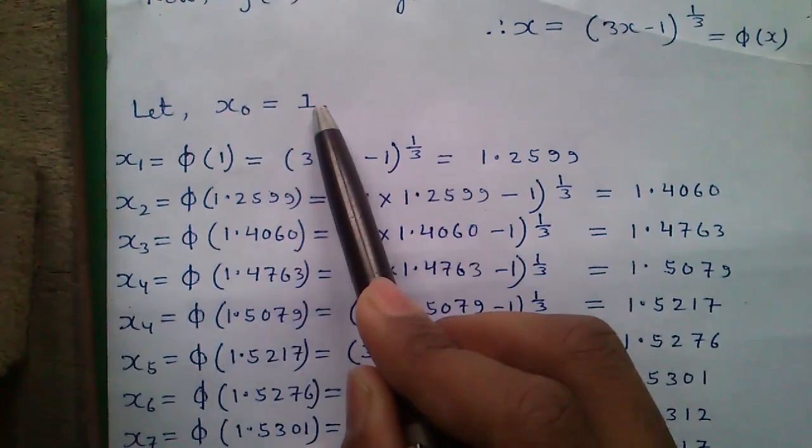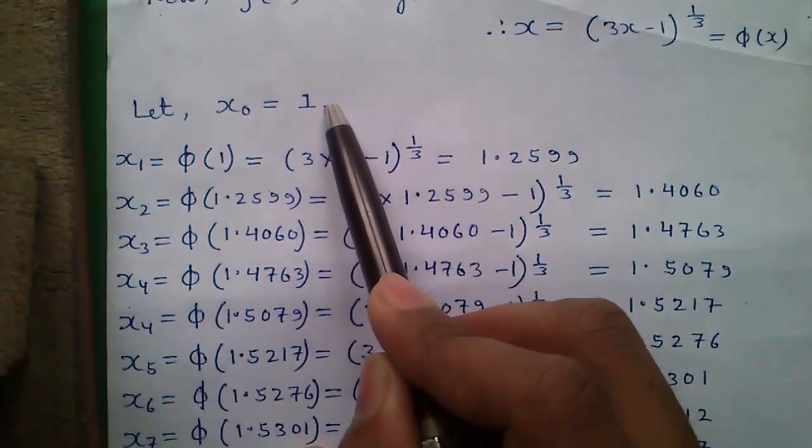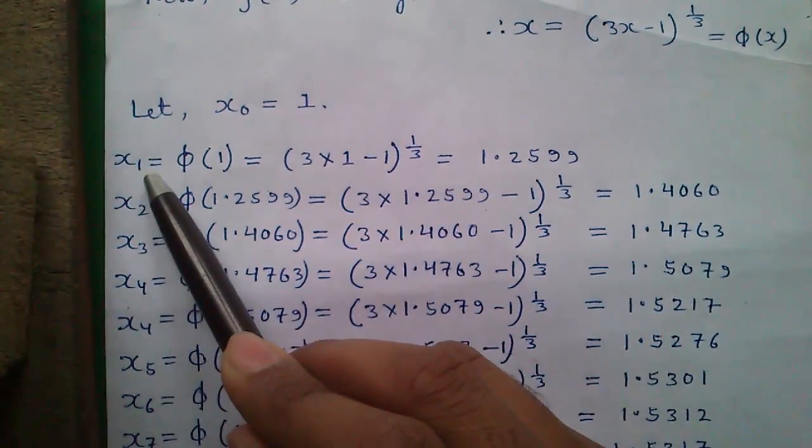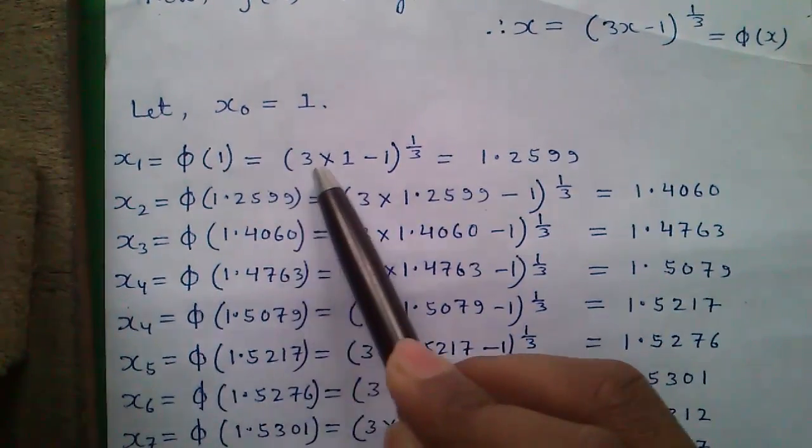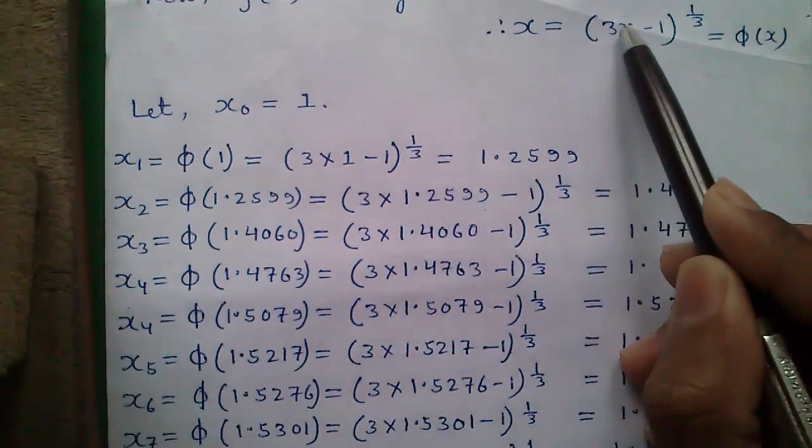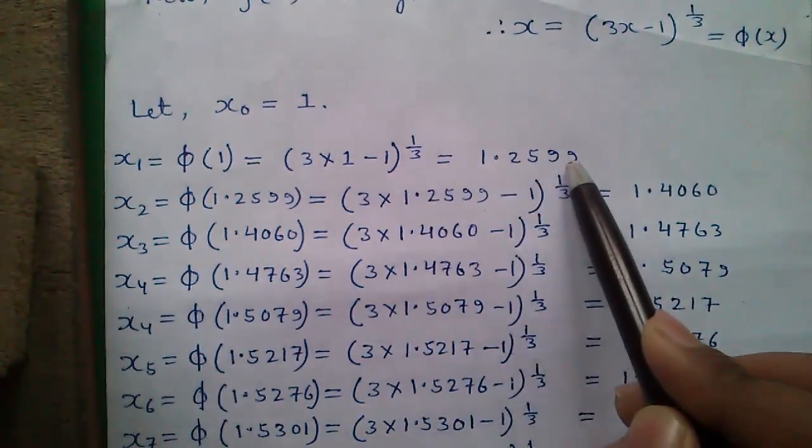Let x₀ = 1, which is our lower value of the range. You can also start with the upper value of the range, no problem. So our first iteration x₁ becomes φ(1) = (3(1) - 1)^(1/3), writing 1 in place of x, which will give you 1.2599.